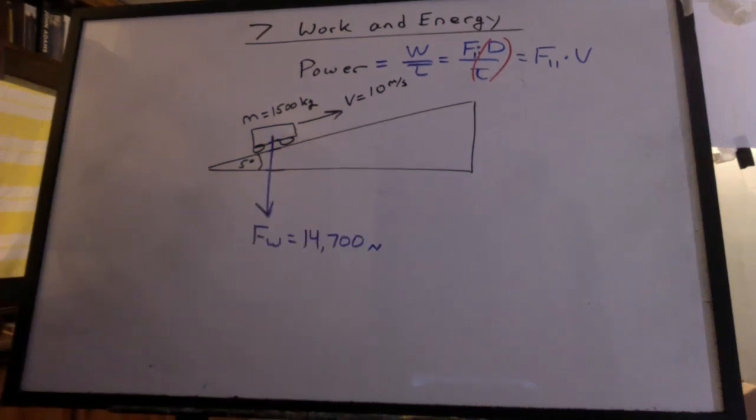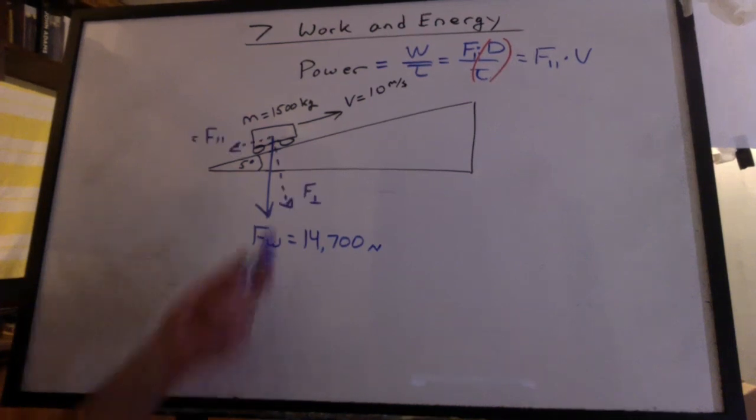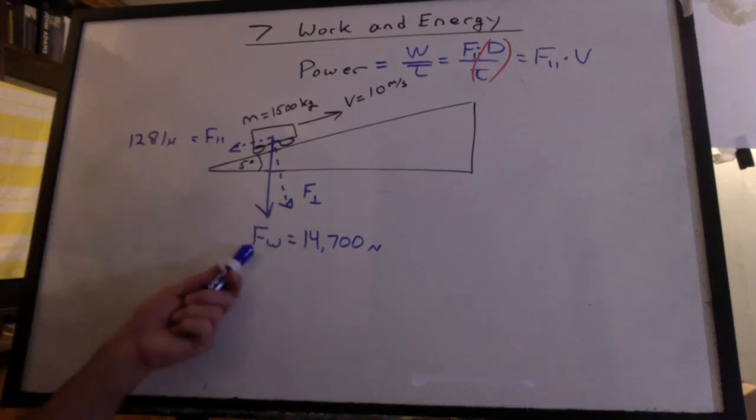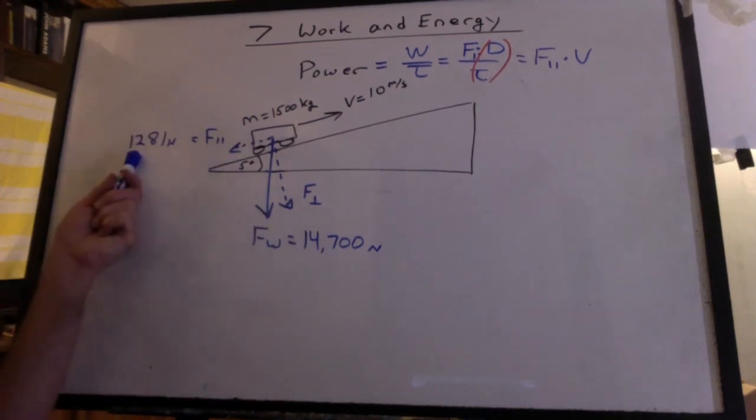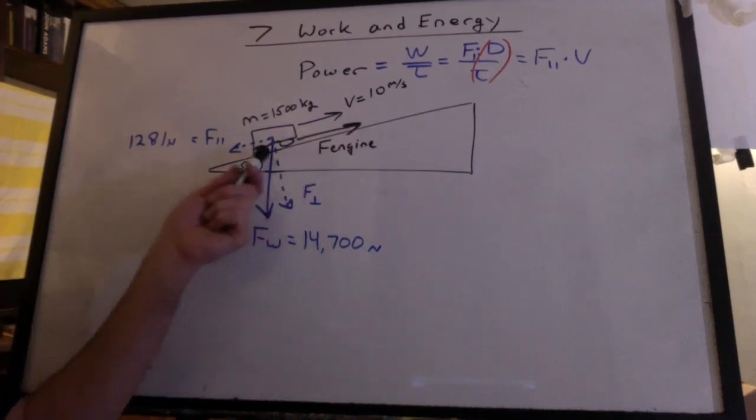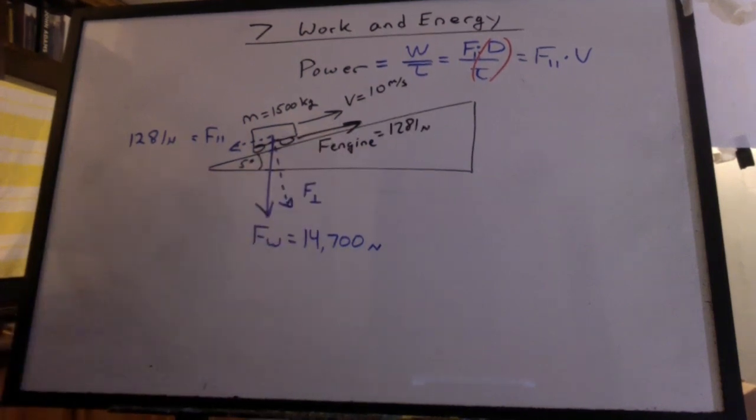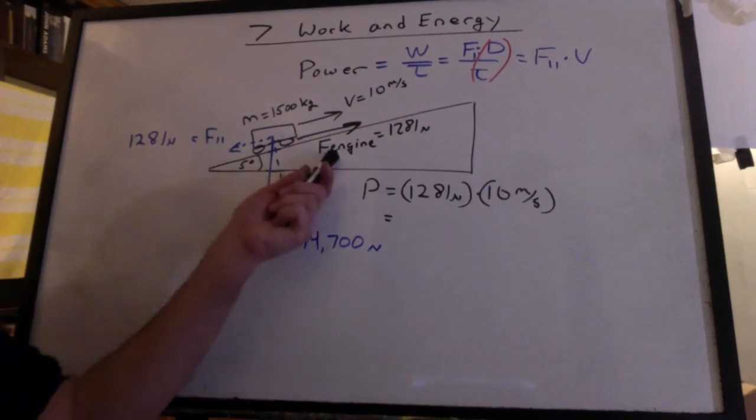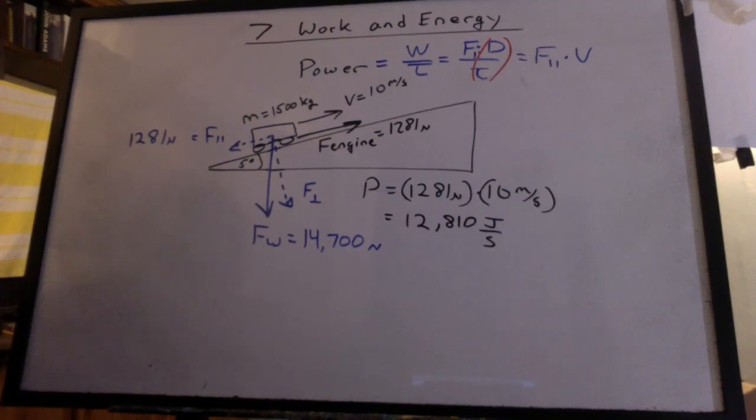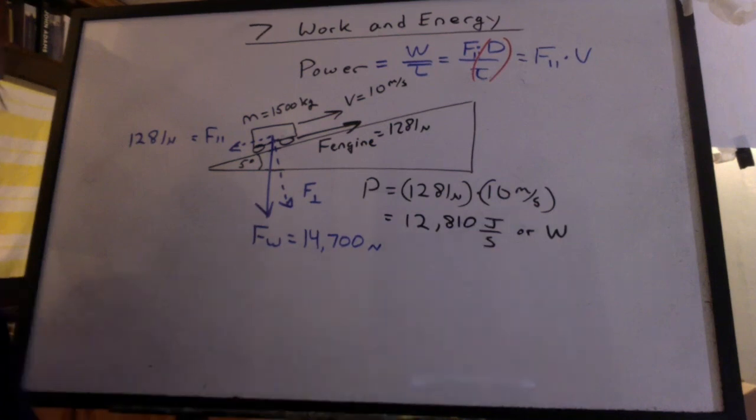Well, we know that the weight is 14,700 newtons and the angle is 5 degrees. We're going to have a perpendicular component and a parallel component. If we know gravity is pulling down the hill with 1,281 newtons, the force of the engine is going to have to make those wheels turn to make this thing have a force of 1,281 up the plane. Now, this force times that velocity, that's 12,810 joules per second, or watts. Now, I know that looks like a W for work, but now with the unit, it's watts.